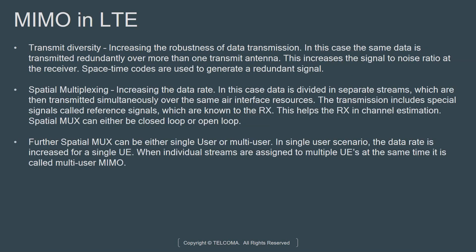MIMO in LTE has been around for quite some time. We have transmit diversity, where we increase the robustness of data transmission — in this case the same data is transmitted redundantly over more than one transmit antenna. This increases the signal-to-noise ratio at the receiver, and space-time coding is used to generate the redundant signals. This is the simplest form of MIMO technique used in LTE, applied for cell-edge users or users experiencing a very low SINR and thus reporting a low CQI.